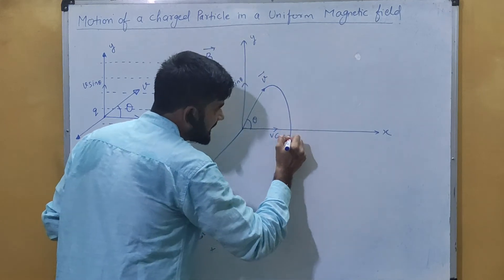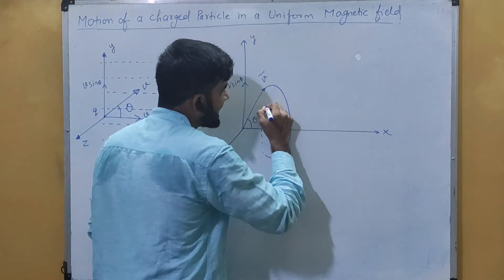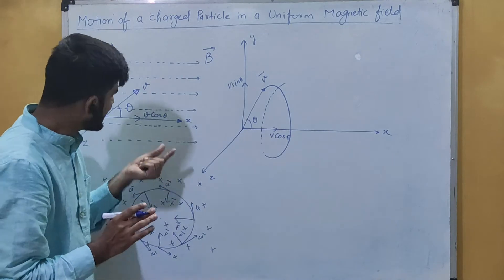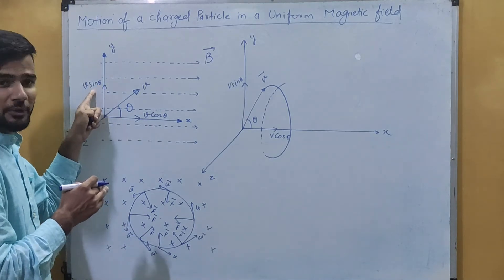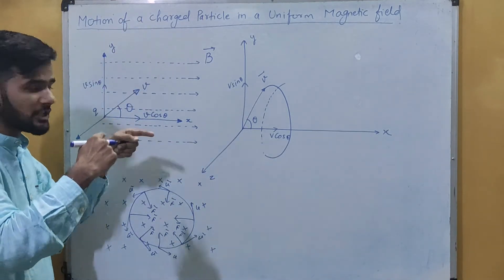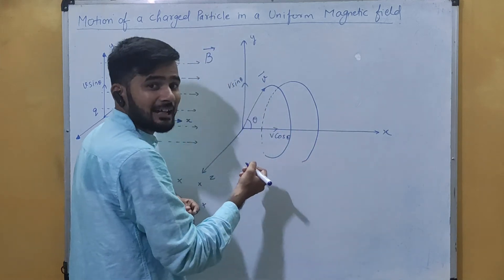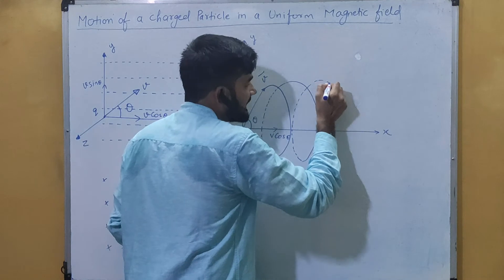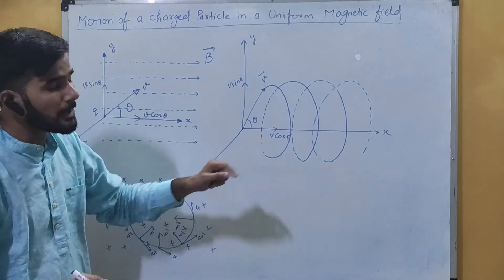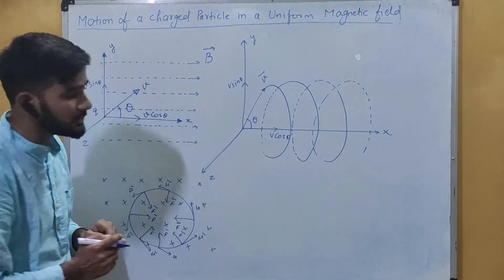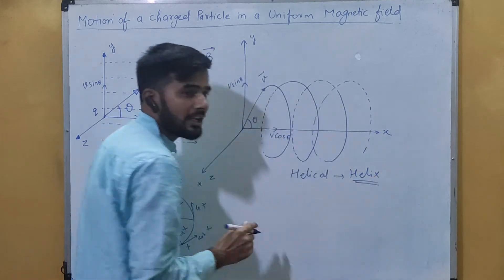Because of v sin theta the particle moves in a circle, and because of v cos theta it simultaneously moves forward in a linear direction. The combined effect of these two components — circular motion plus linear forward motion — results in a helical path. This is simply called a helix.